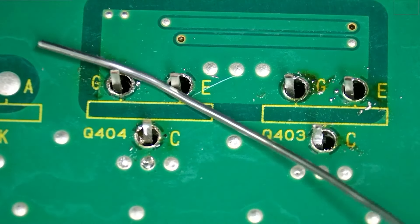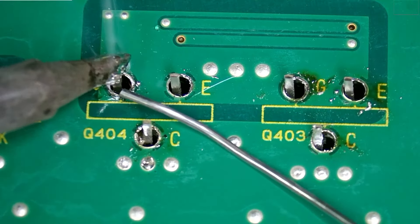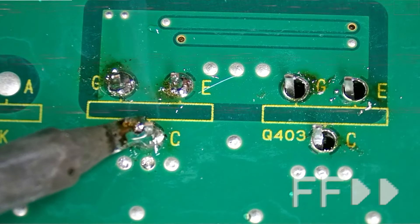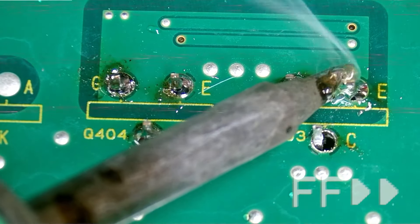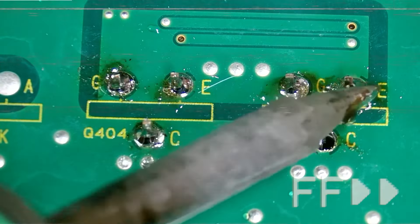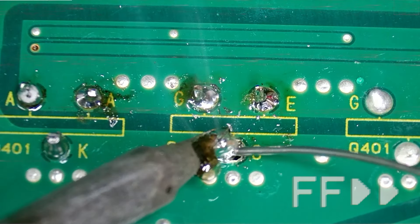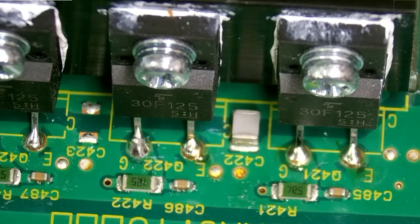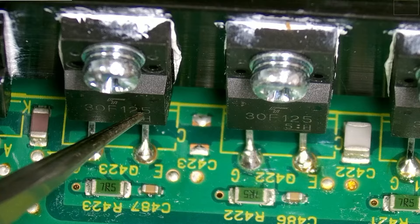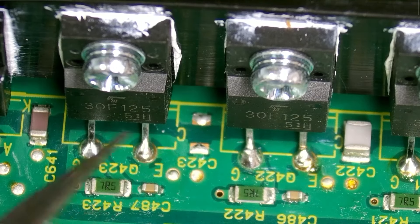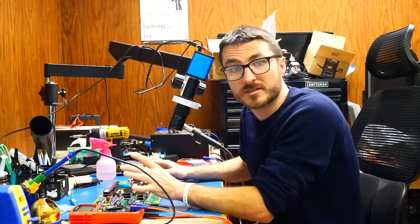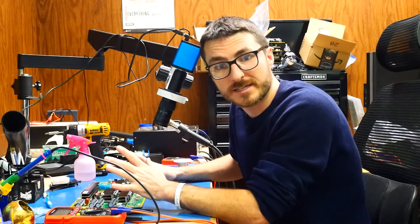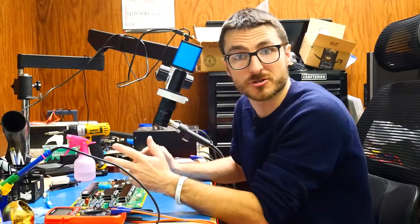Our transistors are in. You can go ahead and solder down the pins. And finally, we have the Q421, Q422, and Q423, which are the 30F125s that we need to replace that were also shorted. You already have a pretty good idea of what the process is, so we'll do those off screen, and then we'll come back once they're replaced, and we'll do some multimeter checks to make sure all the shorts are gone.